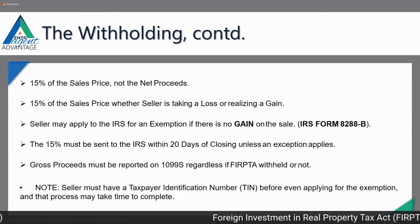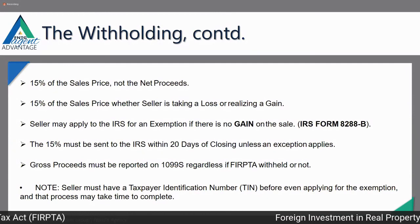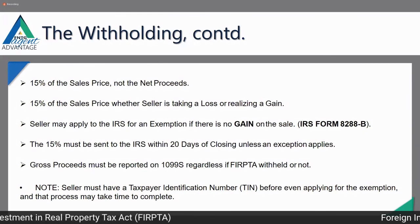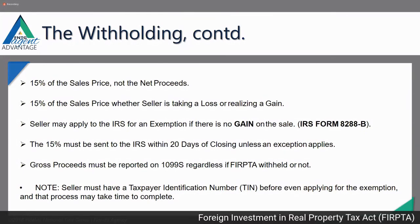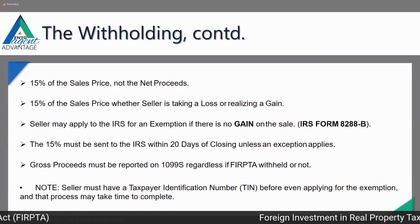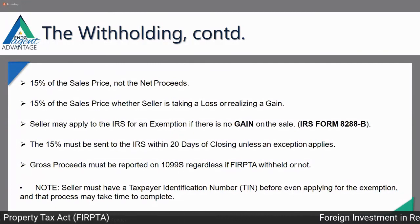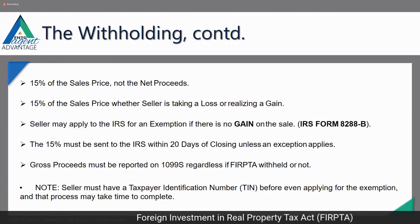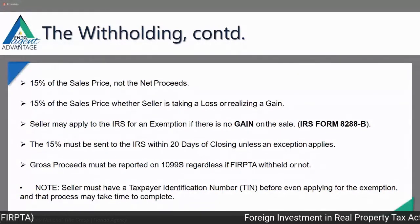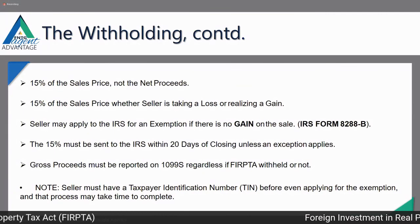Generally, the withholding is 15% of the sales price — not the net proceeds. So if it's a short sale and the seller has to bring in money, it's still 15% of the sales price. For example, on a $100,000 house where the seller is only getting $1,000 back, they still have to bring in that 15%. The withholding applies whether they realize a gain or take a loss. There is a possibility they can file Form 8288-B for an exemption if there's no gain on the sale.